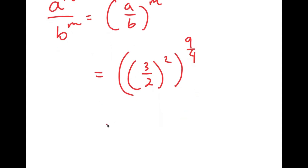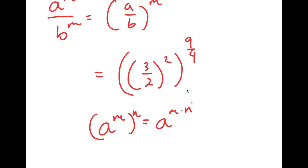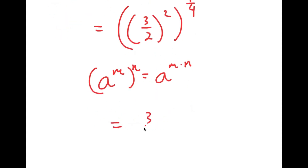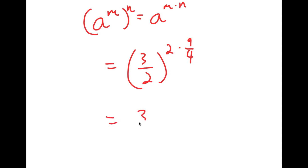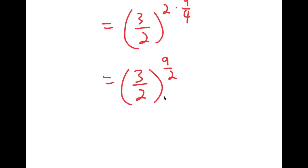Now, if I have something in the form a to the power of m to the power of n, this is equal to a to the power of m times n. So it's going to equal 3 over 2 to the power of 2 times 9 over 4, which is equal to 3 over 2 to the power of 18 over 4, which simplifies to 9 over 2. So I have 3 over 2 to the power of 9 over 2.